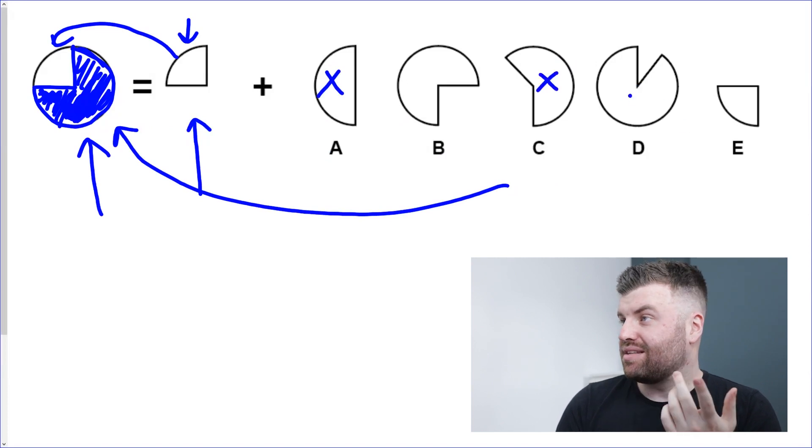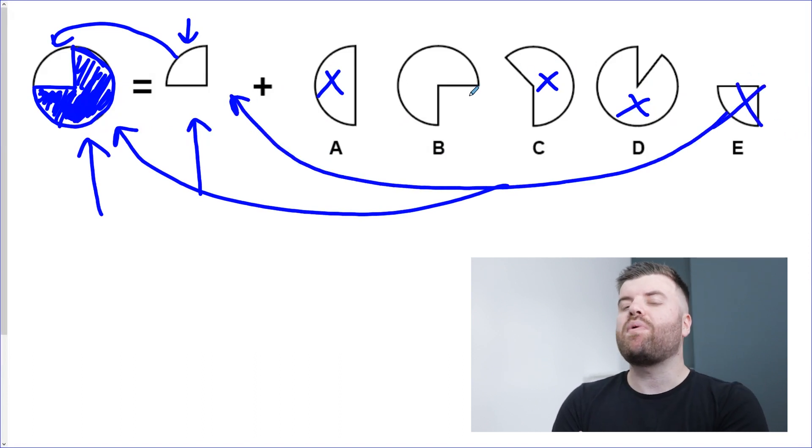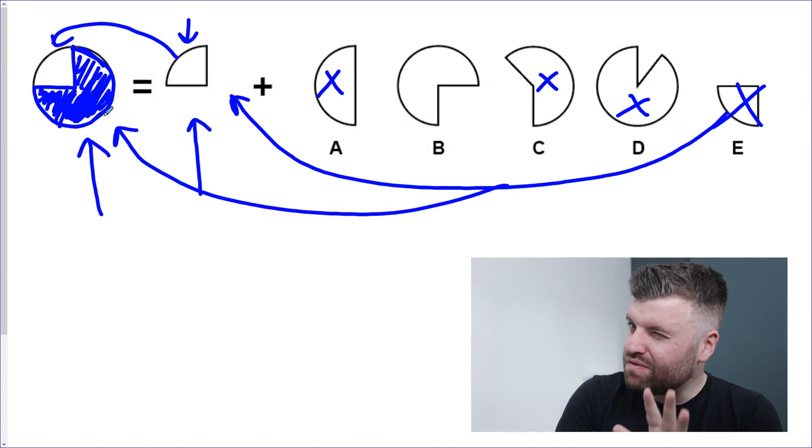Well, I'm looking for three quarters of a circle, so it can't be A, that's half. C is less than three quarters, D is more than three quarters, and E is just the shape we were given in the first place. So by deduction, even if I couldn't visualize the rotation, the answer to this question is B.